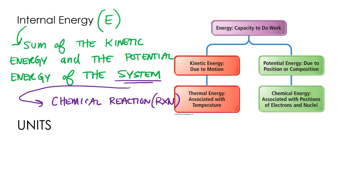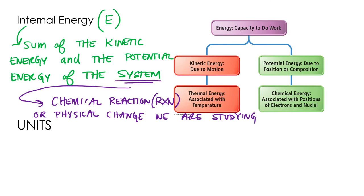The word 'system' refers to what we're studying — the chemical or physical change we're interested in. For example: how much energy can you get out of one gallon of gasoline? Or how much energy do you need to put into one gallon of water to make it boil? Those are questions we'd ask about a system. The system is the chemical reaction or physical change we're studying.